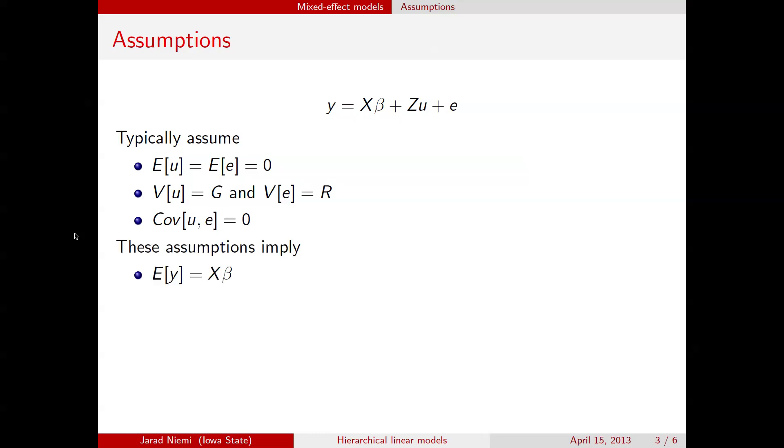If taking these assumptions implies that the expectation for our data itself is x times beta, and the variance here is given by z g z prime plus R, and we're going to call that sigma y. So this is going to be the variance-covariance matrix of our data set overall.